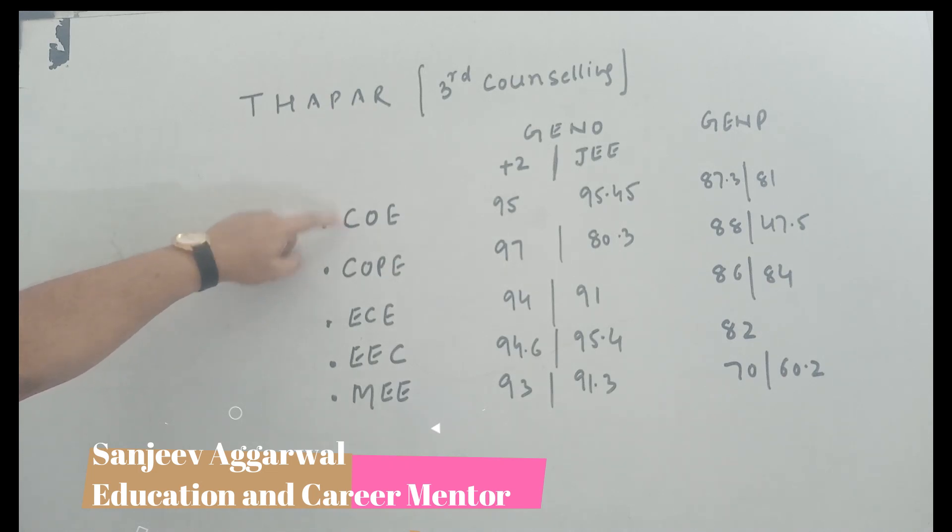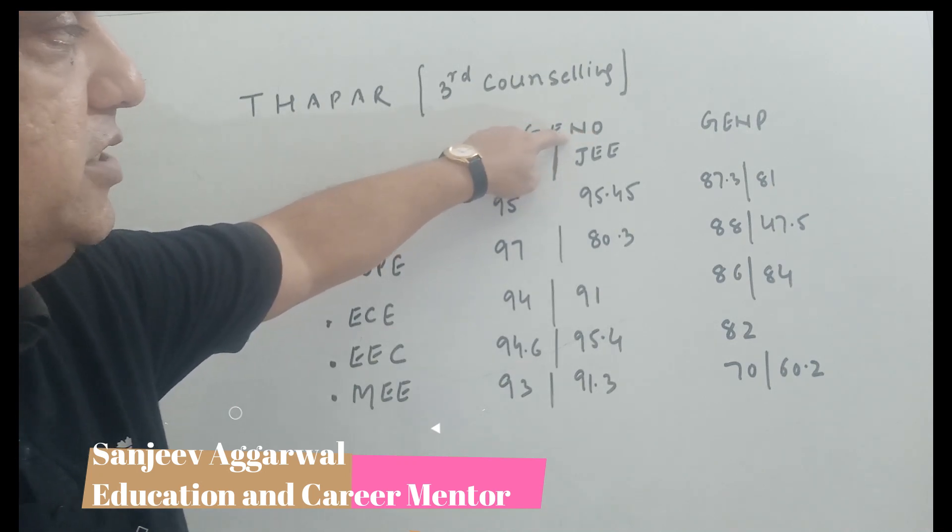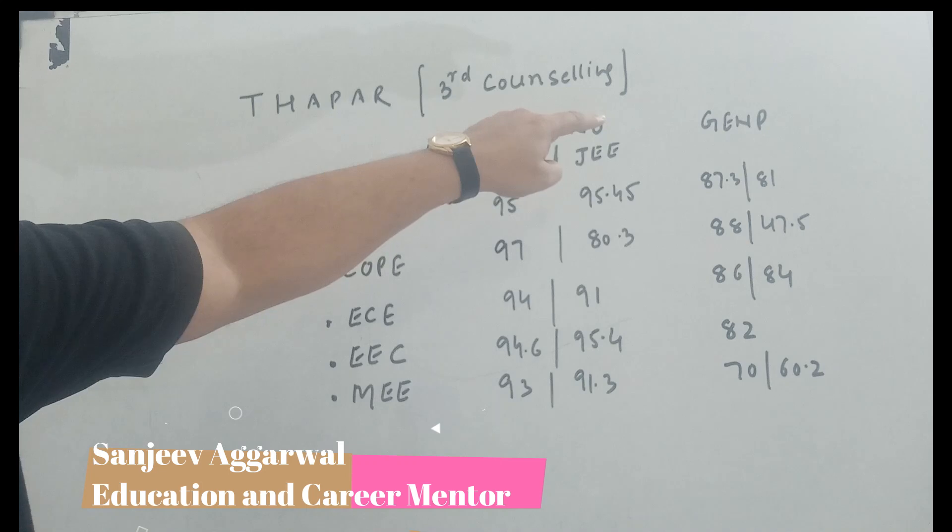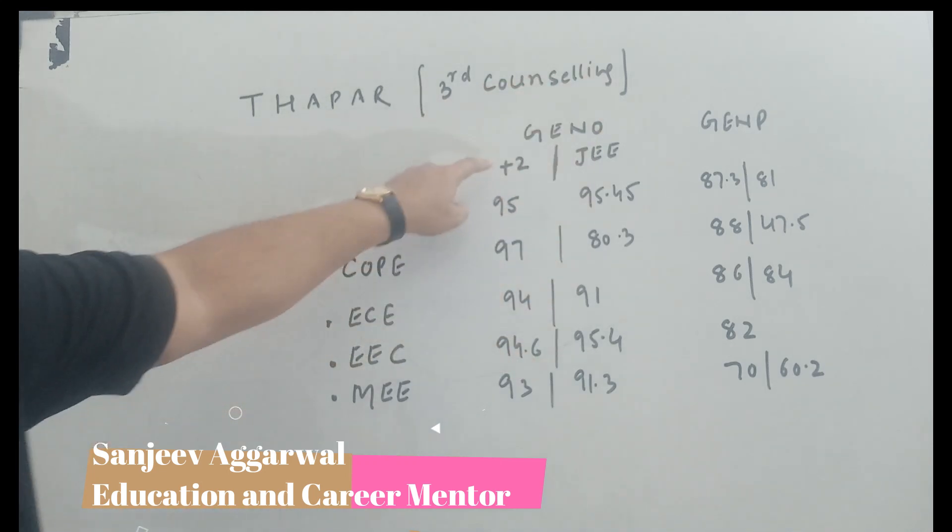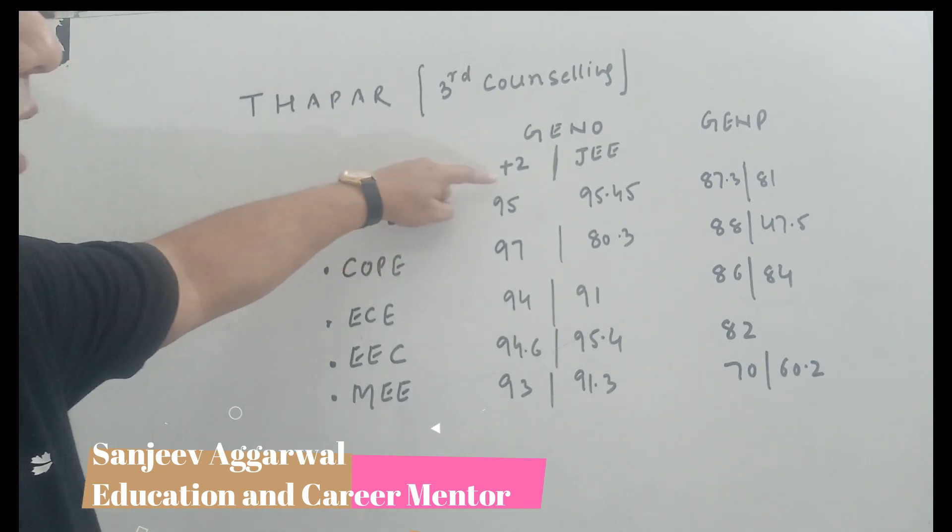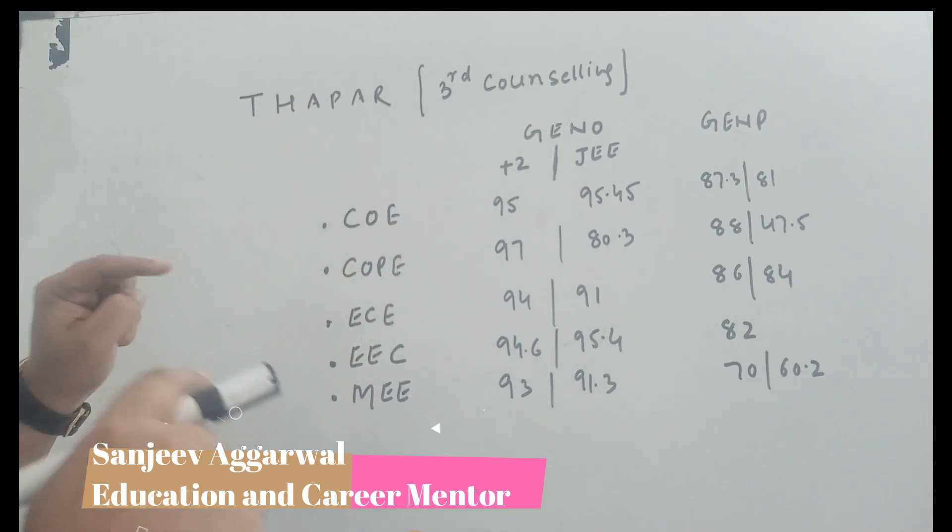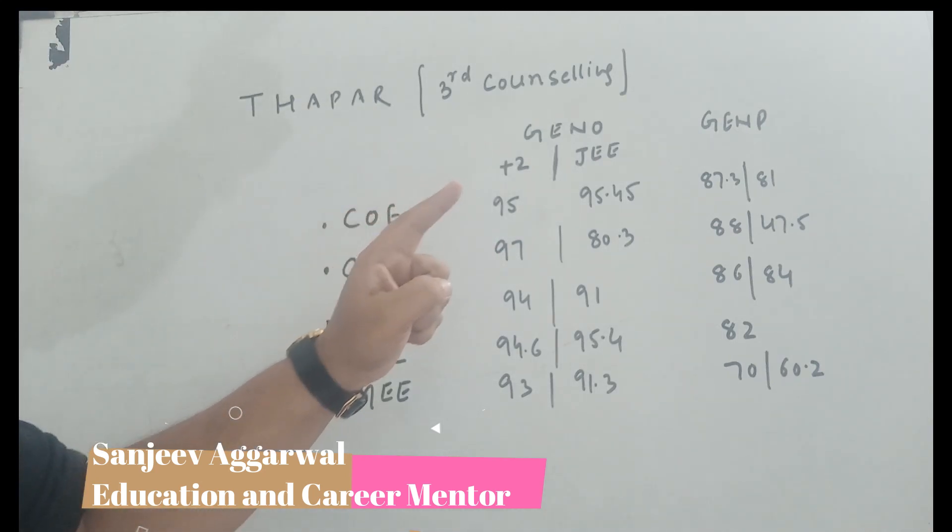COE means Computer Engineering. This is the category I have made: outside Punjab general candidates GENO, GENP. This is the first list. You know the children are the Punjab candidates, general Punjab candidates. This is plus 2 marks, this is JEE marks. So if you remember that for computer engineering, the person who doesn't belong to Punjab, which is outside Punjab, what is the cutoff? Plus 2 is 95 and JEE is 95.45. Same branch, if you have to take a Punjab student, the PCM is 87.3 and JEE is 81 percentile cutoff.